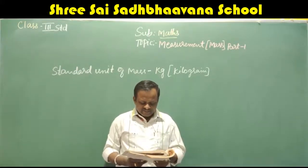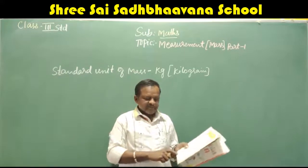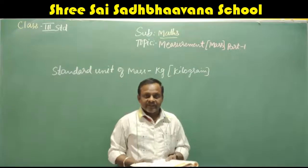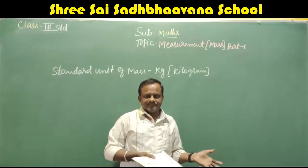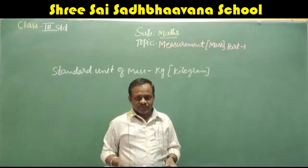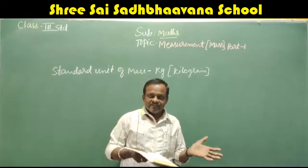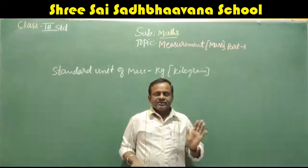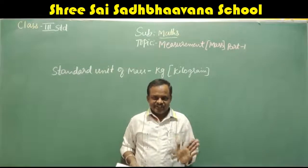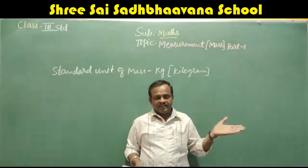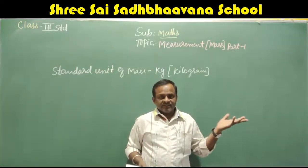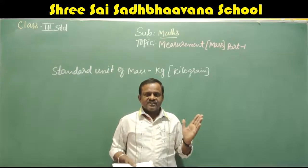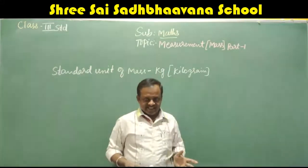The weights for measuring lighter objects are 50 grams, 100 grams, 200 grams, and 500 grams. For measuring gold and costly things they also use milligrams, which you will study in higher classes. For very heavy things they use quintal. But at your level, you just need to learn about grams and kilograms.